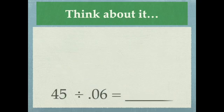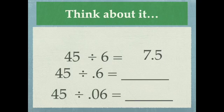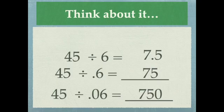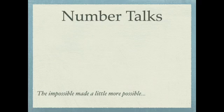Which brings us to that really hard one you probably couldn't do in your head. If this answer is seven and a half, I can just write that as 7.5. And if I know that answer is 7.5, watch what happens to the decimal. Well, there you go — I just did it. How many six hundredths are in 45? Seven hundred fifty six hundredths are in 45. I just made a very impossible problem a little more possible.